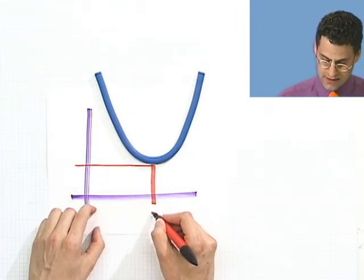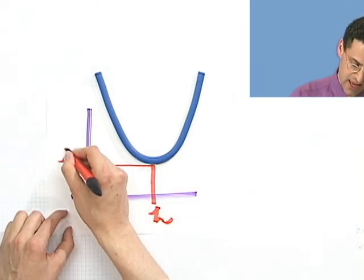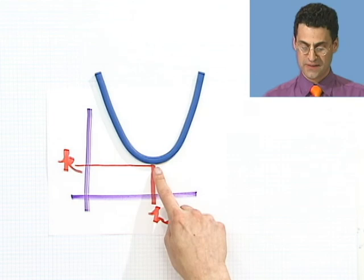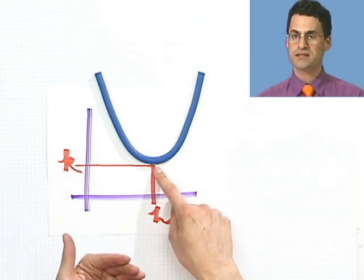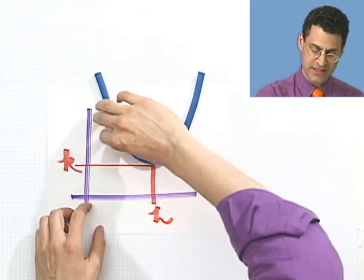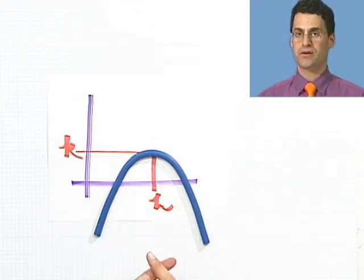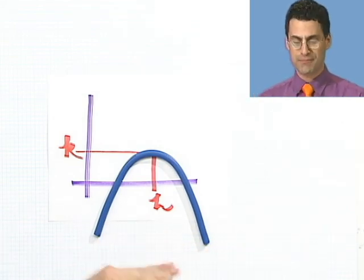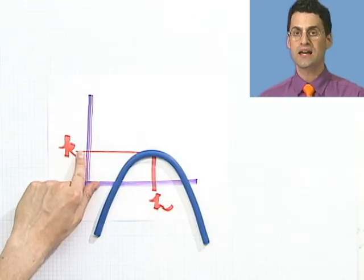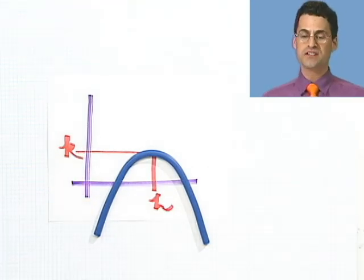If this is h and this is k, the vertex is going to happen — if it's a happy face parabola — it's going to give us a minimum value. That minimum value is the y value, which will be k. And where that minimum value happens, the location, is going to be h. Conversely, if it's a sad face parabola, then we have a maximum at the vertex. That maximum value is going to be k, and the location where that happens is at h. So when someone says find the maximum or minimum of a particular parabola, all you've got to do is find the vertex and determine whether it's a happy face or a sad face parabola.